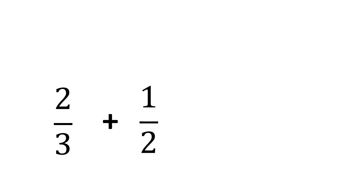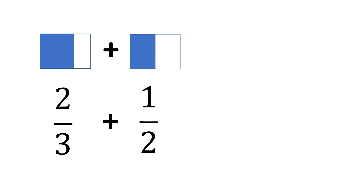How about 2 thirds plus 1 half? This time it is harder because the denominators are not the same, and the two are not multiples of each other, making it harder to find the same denominator. Let us look at the figures first. We have 2 thirds — 2 shaded parts out of 3 — plus 1 half, or 1 shaded part out of 2. How can we combine them if these two figures don't fit with each other?